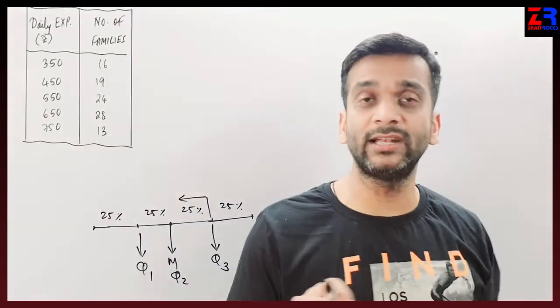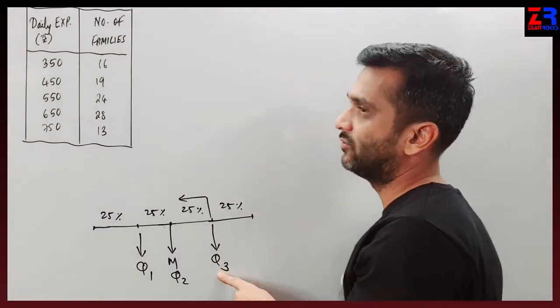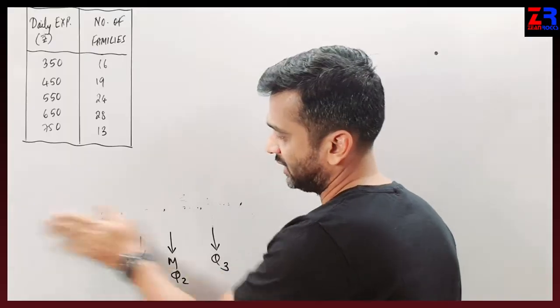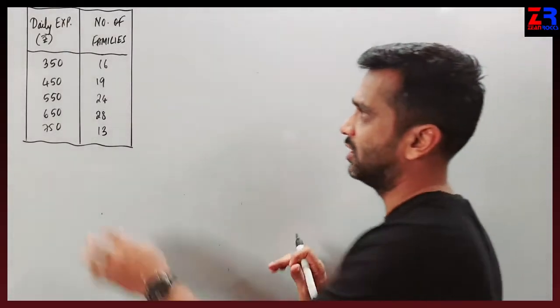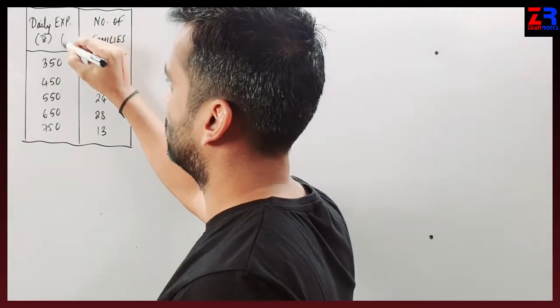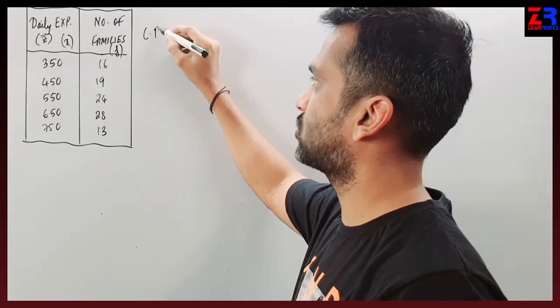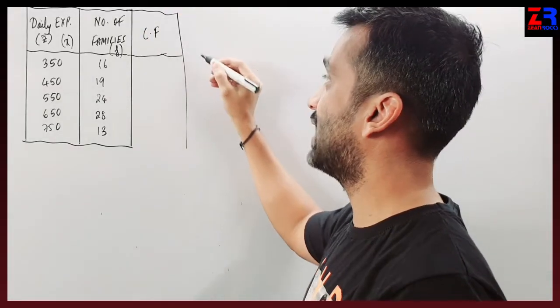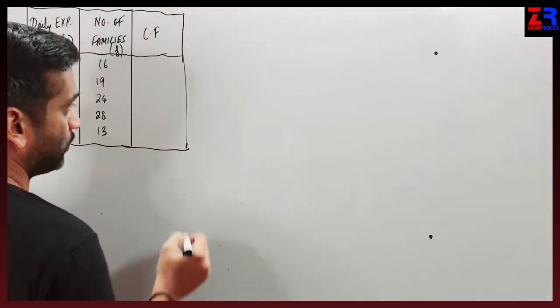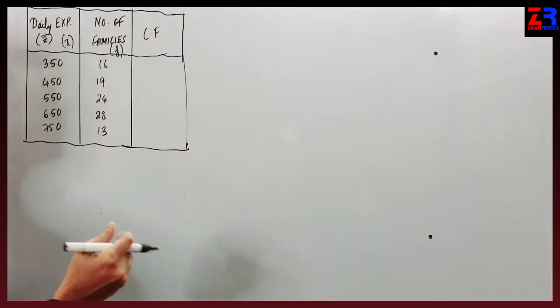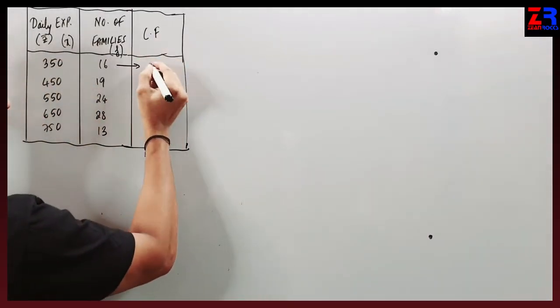In this question they have not directly told us to find the value of quartile 3, but it is understood that below 75% means you are supposed to find quartile 3.